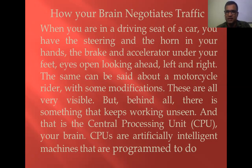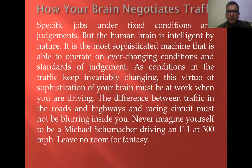Your brain always works. Your brain has to take decisions in every dynamic situation. Practically, if you go out in the city street with your vehicle — maybe motorcycle or private car — you must take decisions every second. CPUs are artificially intelligent machines programmed to do specific jobs under fixed conditions and judgments. But the human brain is intelligent by nature. The computer's CPU works according to a fixed program, and beyond that program, it cannot work. But the human brain changes decisions in every situation.